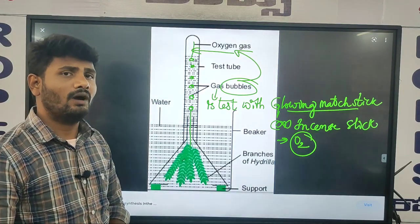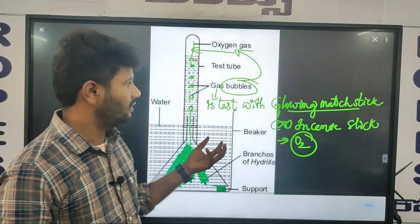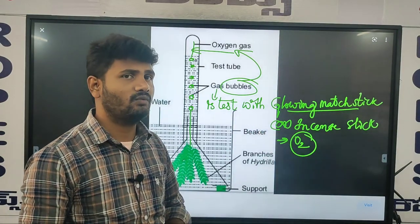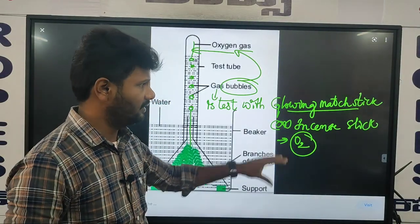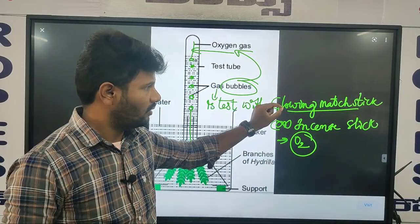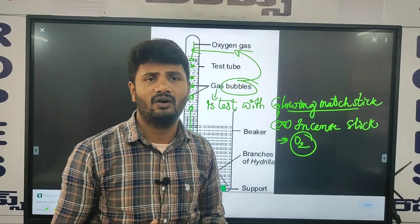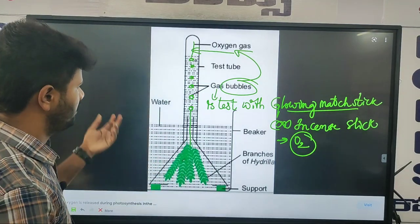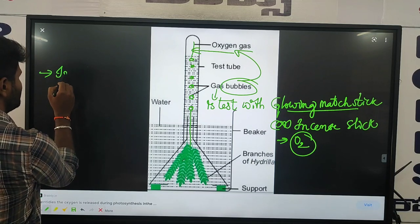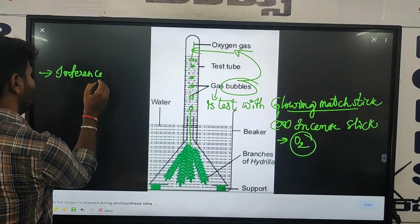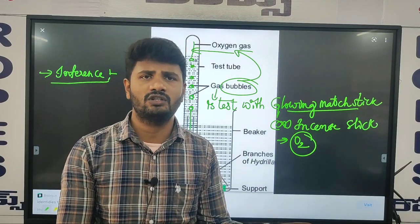This is the procedure. Now the observation: when we show the glowing matchstick or incense stick near the gas bubbles, it burns. The inference and conclusion: the oxygen is produced during the photosynthesis process.